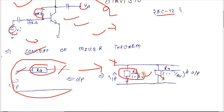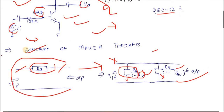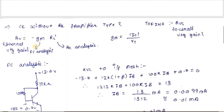The value of the input-side impedance is Z/(1 − Av), where Av is the internal voltage gain. The output-side impedance is Z/(1 − 1/Av). This theorem is valid for resistance, capacitance, and inductance.